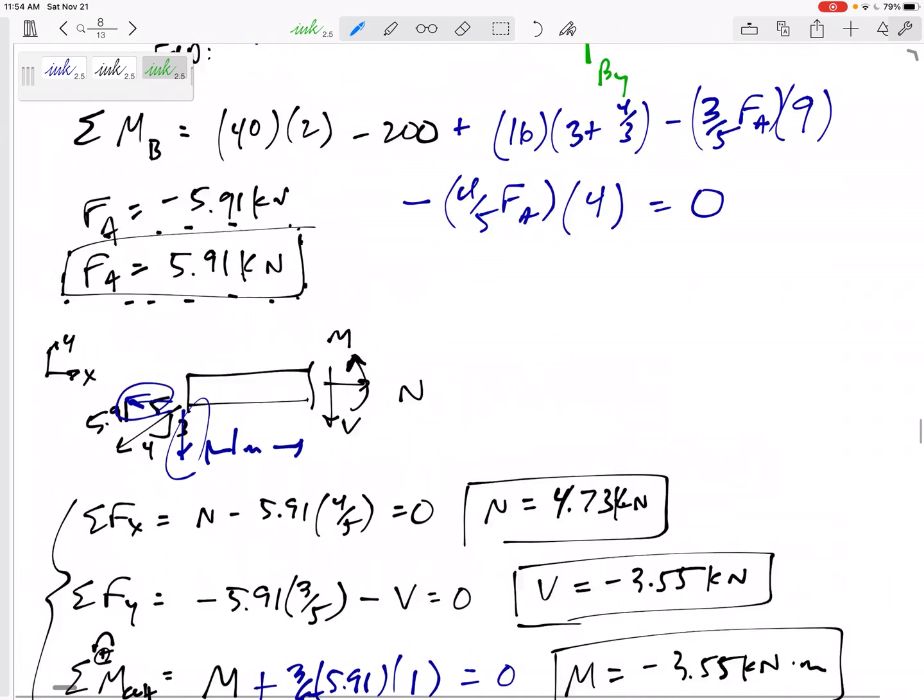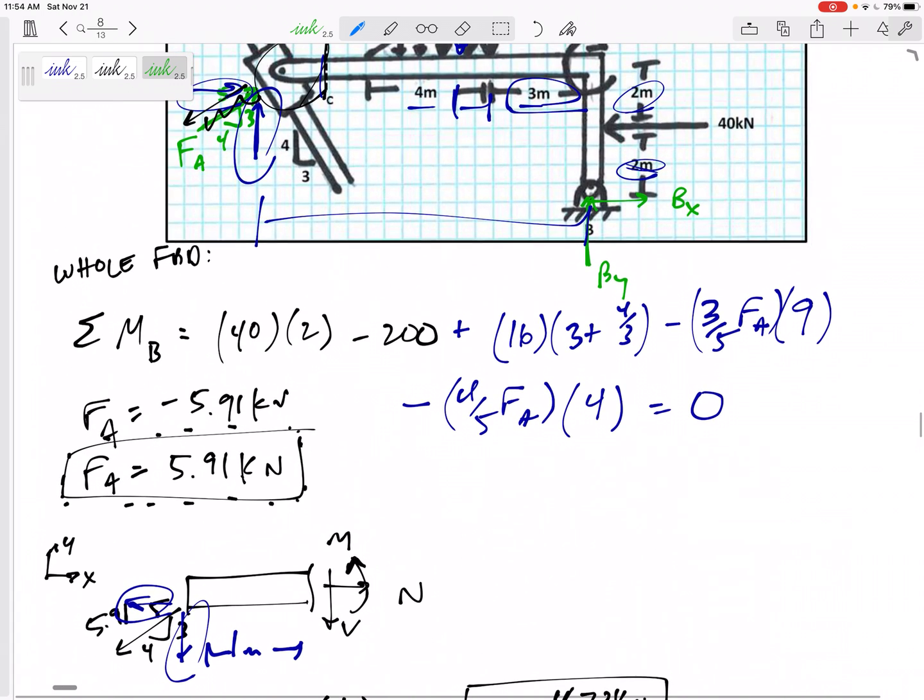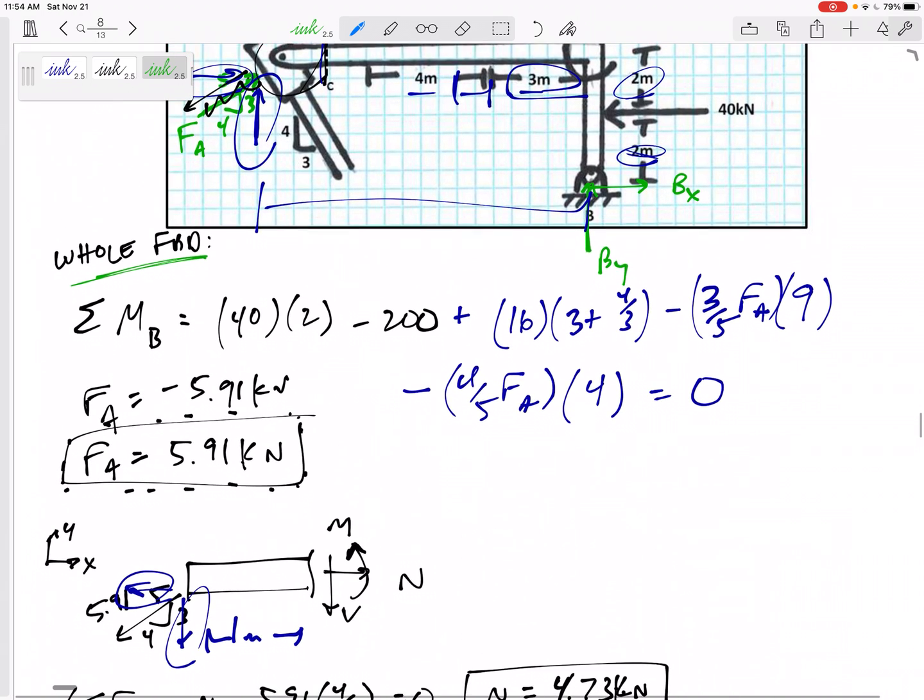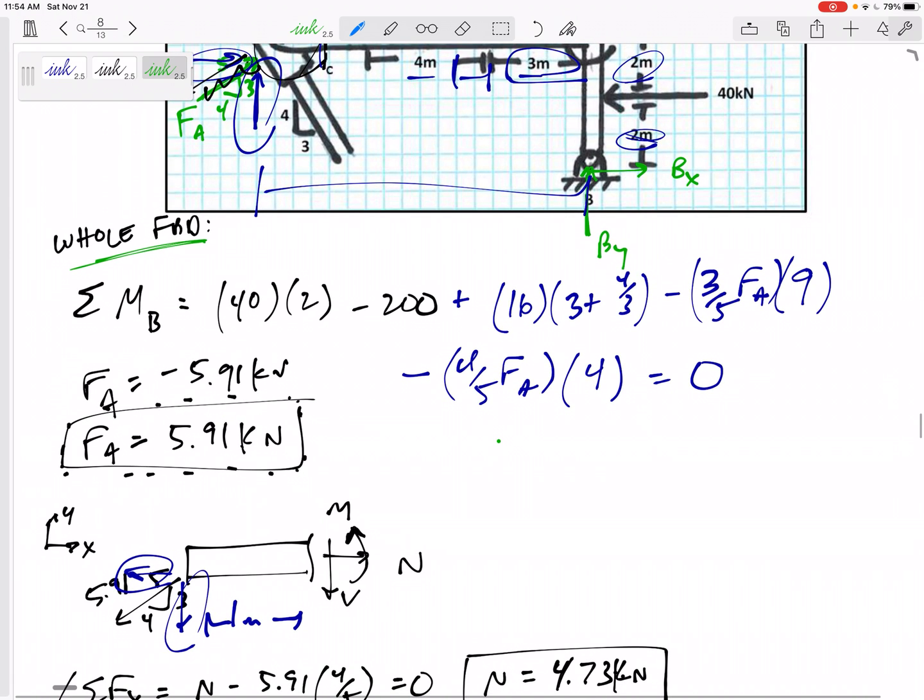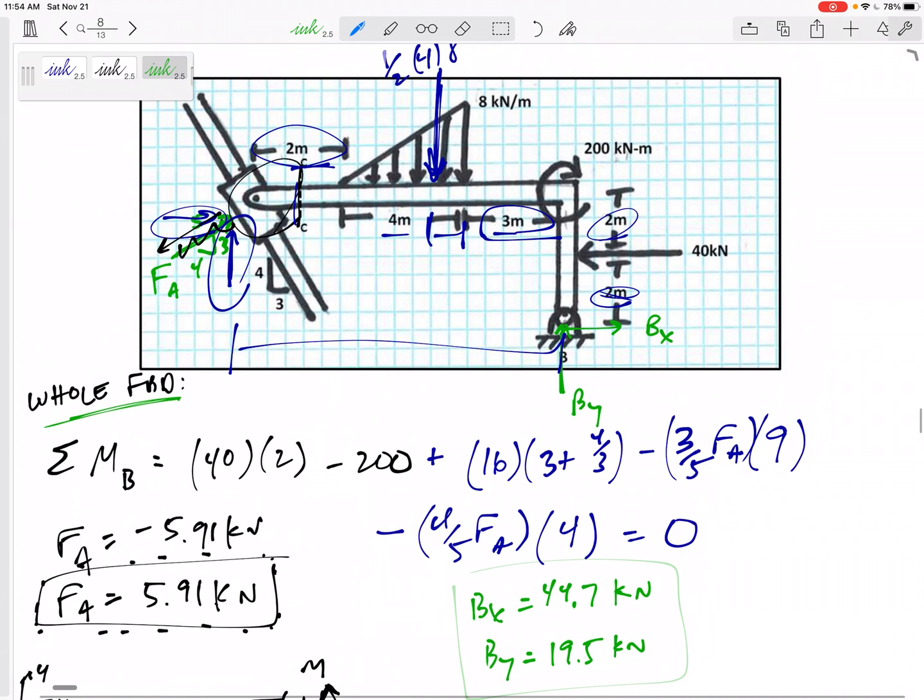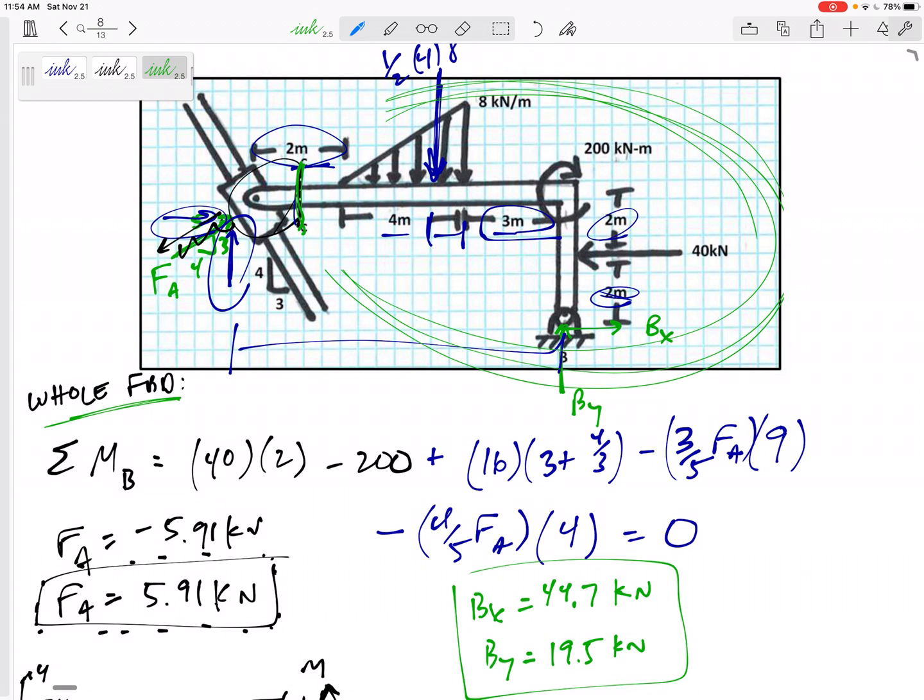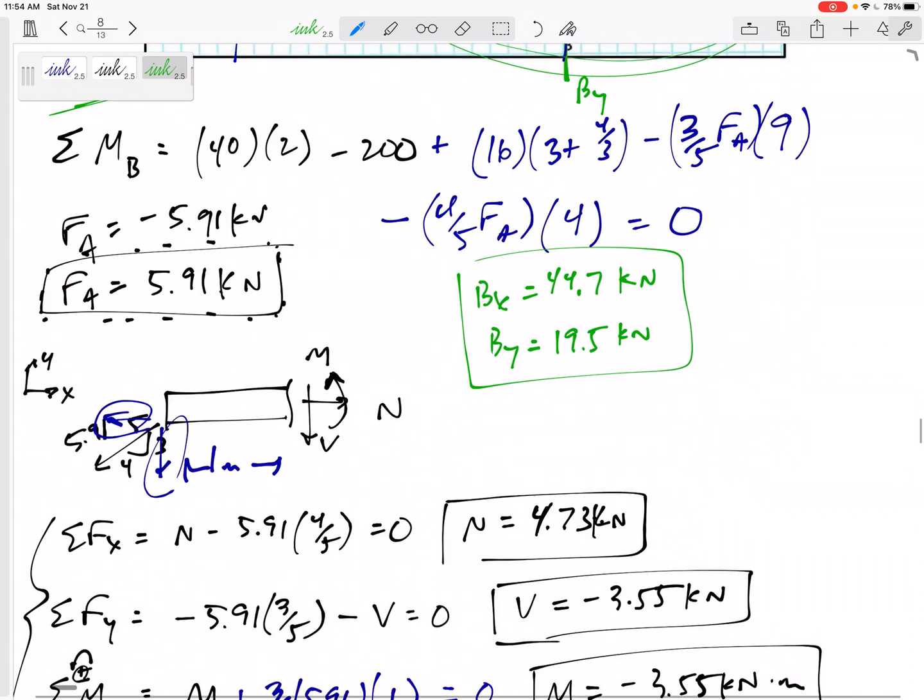Now, I could double check if I had looked at the whole free body diagram and sum the forces in X and Y, I would have gotten B_X. Let's see. It looks like I've got 44.7 kilonewtons and B_Y 19.5 kilonewtons. And so I could have cut it and kept this part of it and solve for N, V, and M.